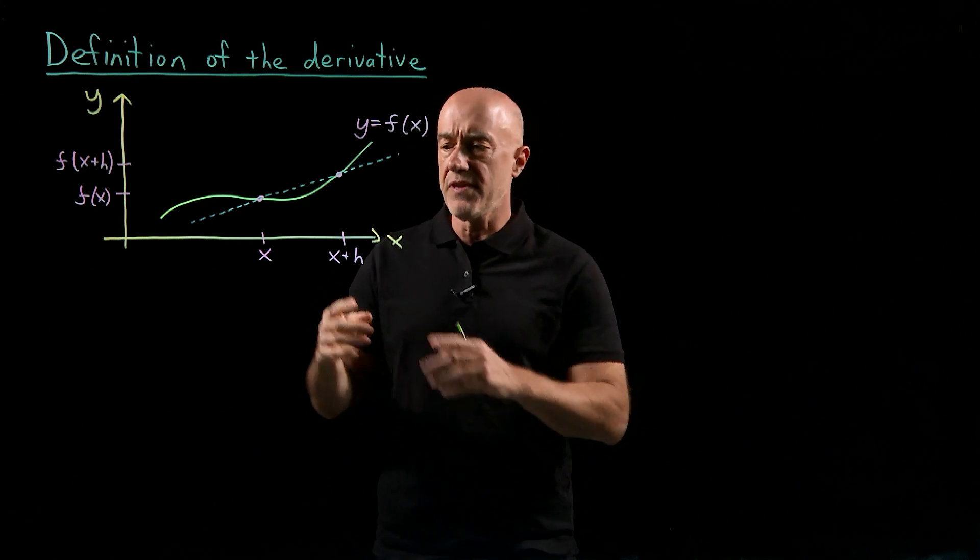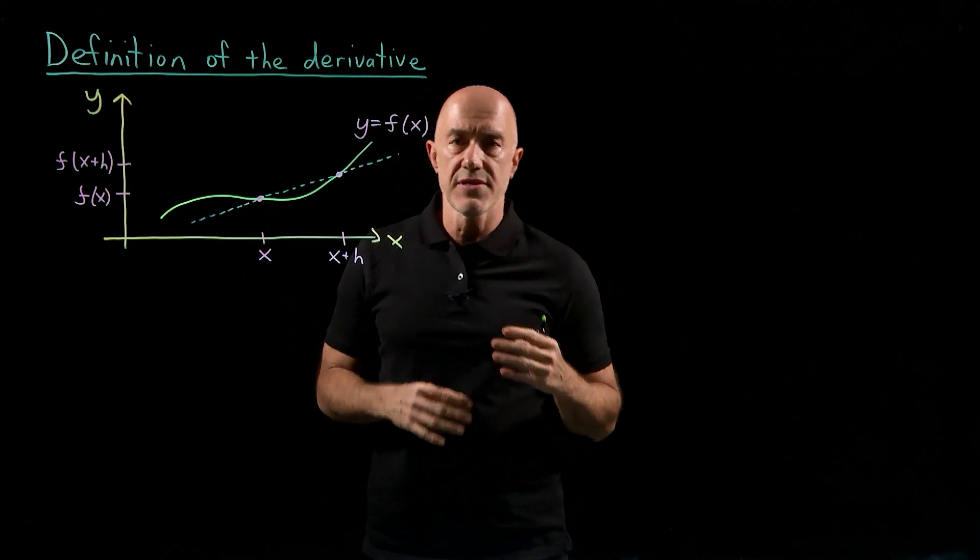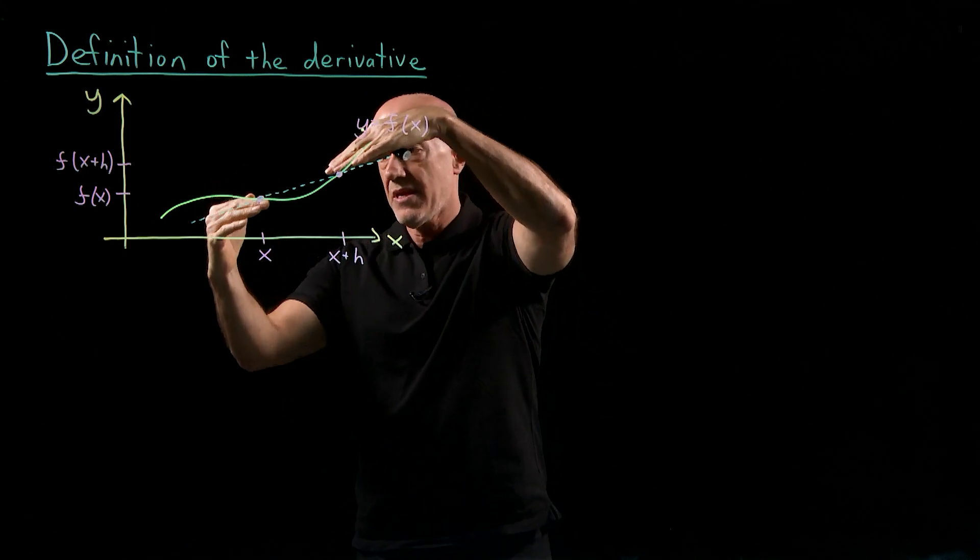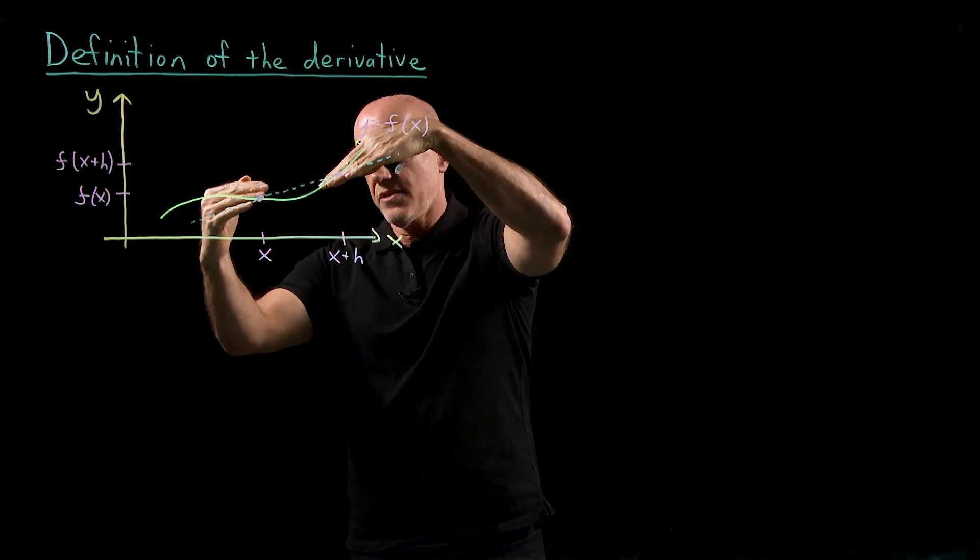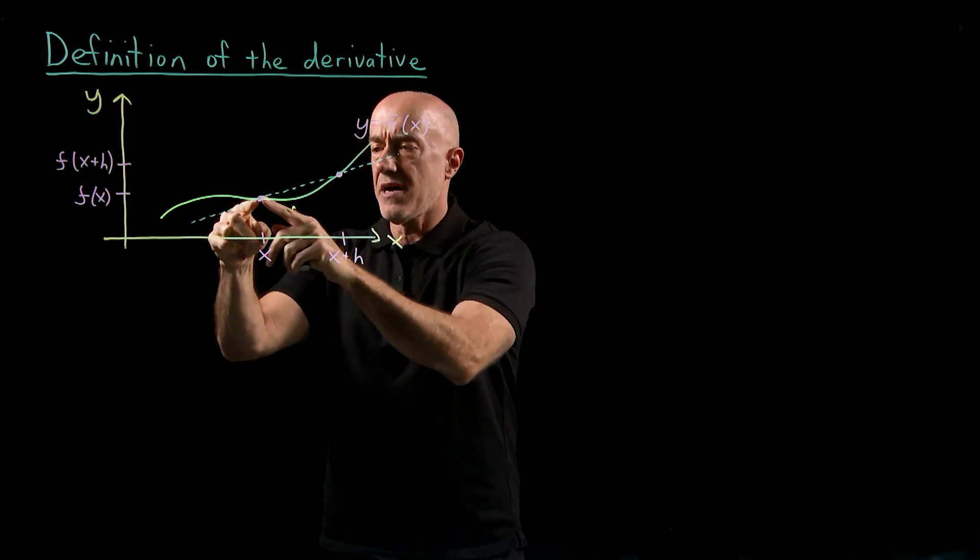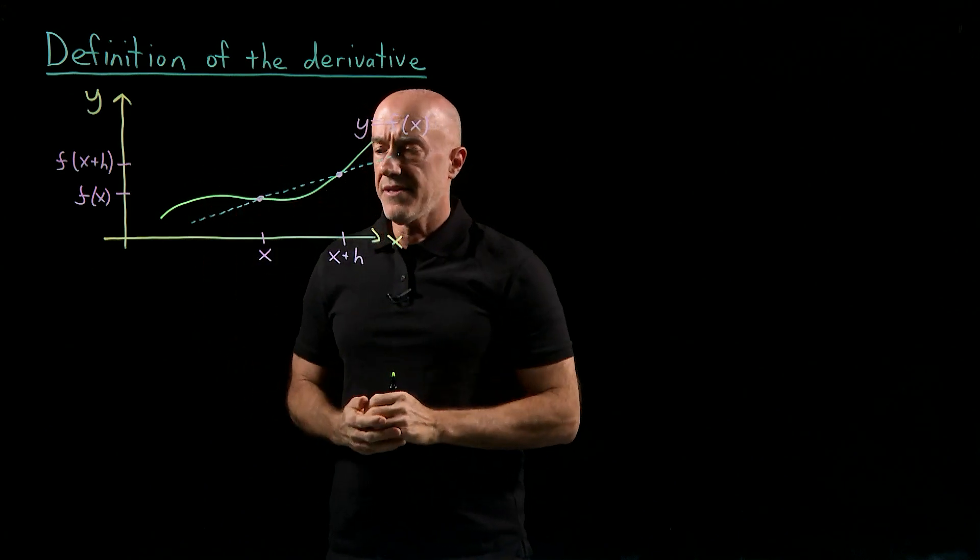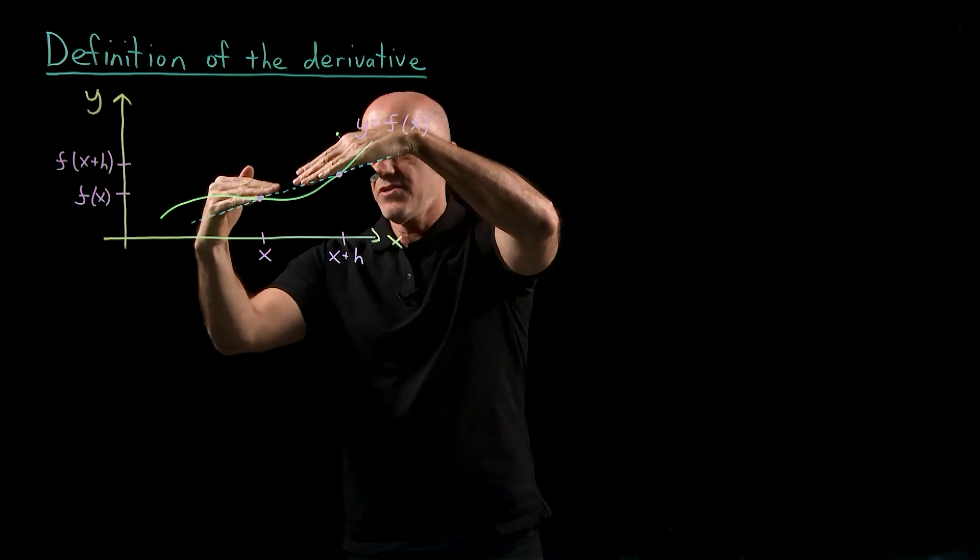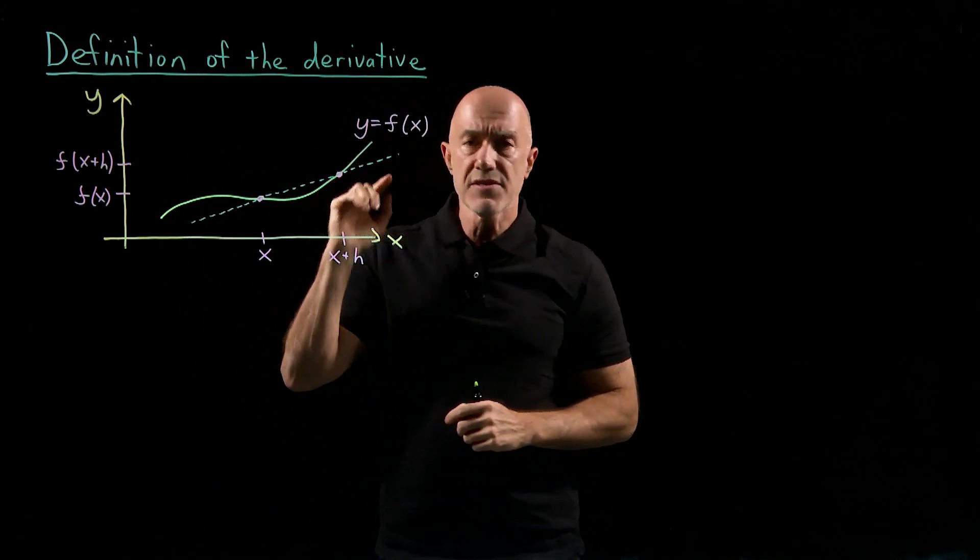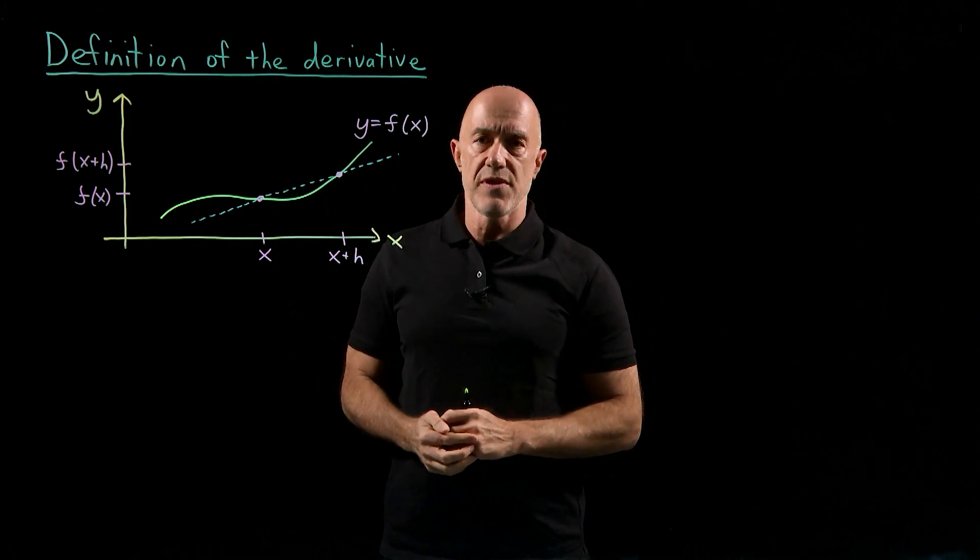Now the idea of the derivative is that we take h and we bring it closer to zero, so x plus h gets closer to x. As we do this, this line is going to adjust and come down until it becomes tangent to the curve at the point x. The slope of that tangent line is the definition of the derivative.